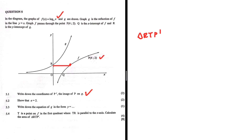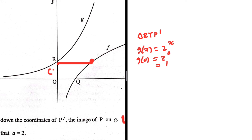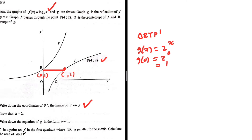R is the y-intercept of g. Since g(x) = 2^x, letting x = 0 gives 2⁰ = 1. So the y-coordinate of R is 1 and the x-coordinate is 0, giving R = (0, 1). For point T, the y-value is also 1 since TR is parallel to the x-axis. We need to find the x-value of T, and we can calculate it because T lies on f(x).